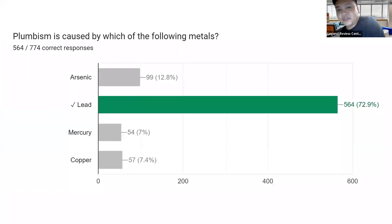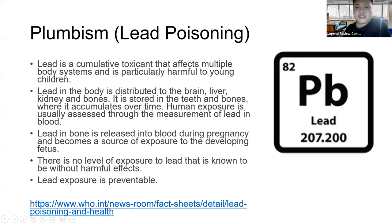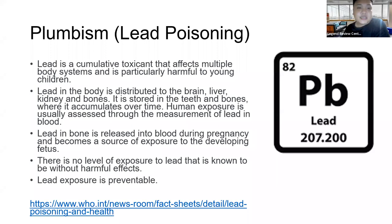Next: Plumbism is caused by which metal? Many got this correctly — the answer is lead. Plumbism is lead poisoning. Lead is a cumulative toxicant that affects multiple body systems and is particularly harmful to young children. Before, paints in homes contained lead. Studies found that lead can cause a decrease in IQ in children, which is why lead was removed from paint.